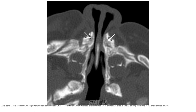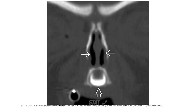Axial bone CT in a newborn with respiratory distress demonstrates congenital nasal pyriform aperture stenosis, with the anterior medial aspect of the maxilla causing narrowing of the anterior nasal airway. Coronal bone CT in the same patient demonstrates the narrowing of the anterior nasal airway.